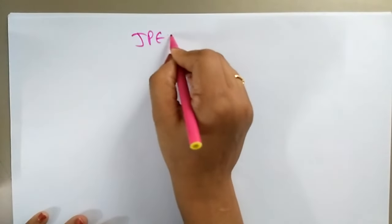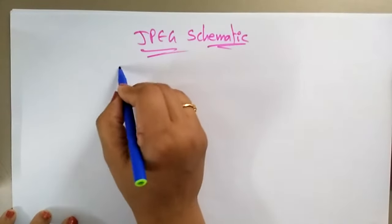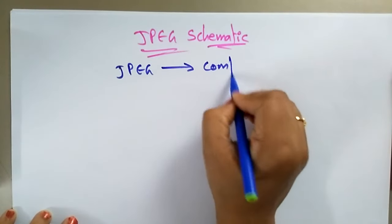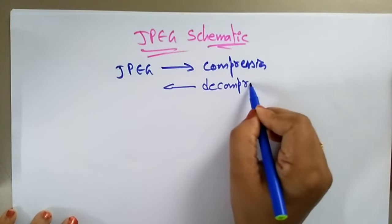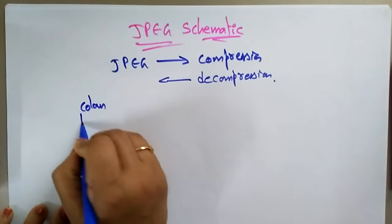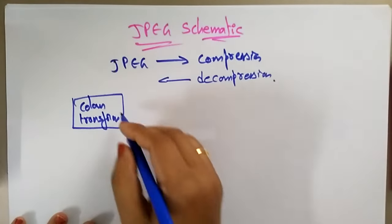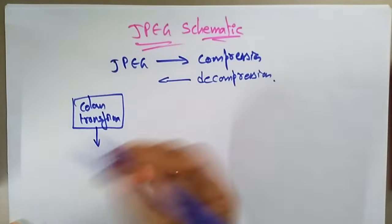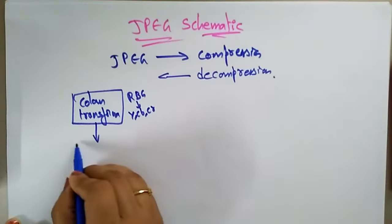Let me explain the JPEG schematic. First, I want to compress a JPEG file, and then I need to decompress it. For compression, the first step is the color transform. Since we are talking about images, they are in color — red, blue, green. But JPEG will convert it into a different format: YCbCr, instead of RGB.